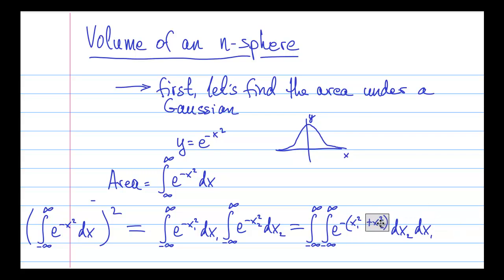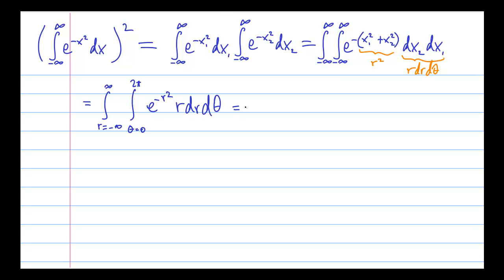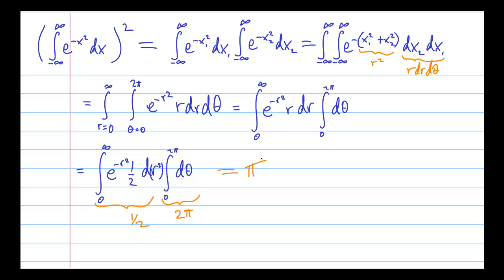Now, the trick is to rewrite this double integral in polar coordinates. And once we do that, it turns out that this double integral in polar coordinates separates into the product of two single integrals, like so. And we do those integrals separately, and the angular integral gives us 2π, and the radial integral gives us 1/2, and so the answer is π.